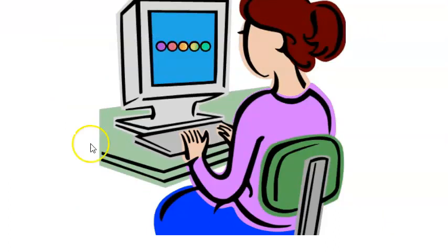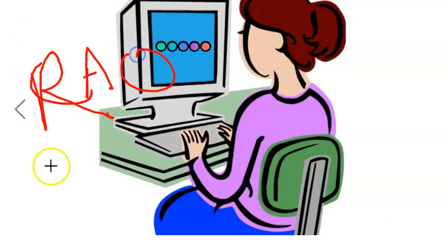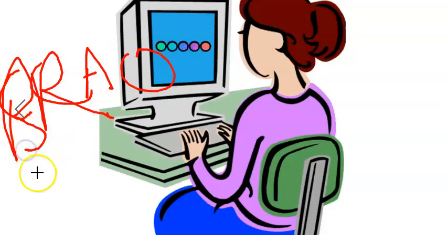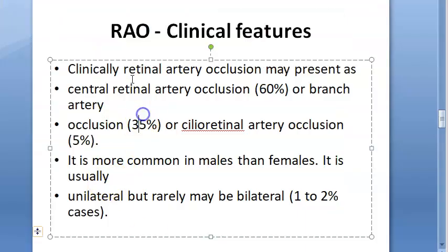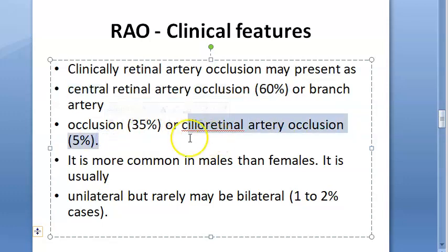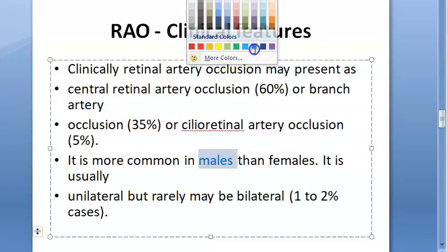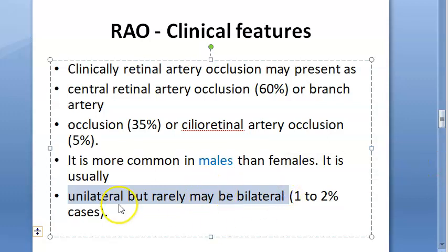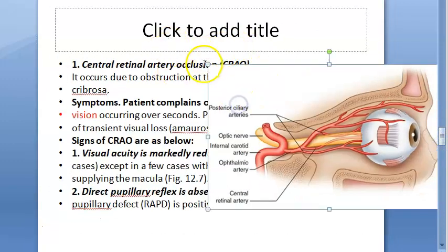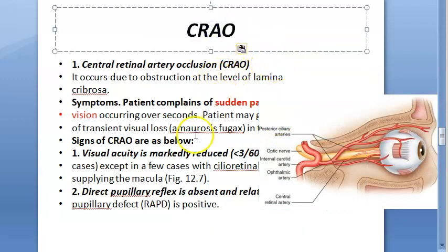Retinal artery occlusion has two main types: central retinal artery occlusion (CRAO) and branch retinal artery occlusion (BRAO), with cilio-retinal artery occlusion as an additional type. CRAO is more common in males and is usually unilateral — only one to two percent of cases are bilateral. We will focus mainly on central retinal artery occlusion.